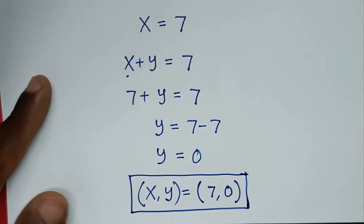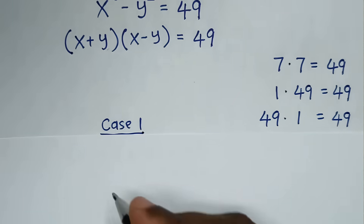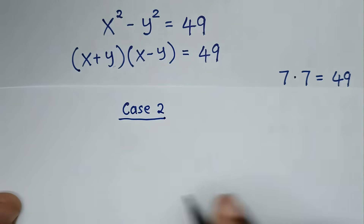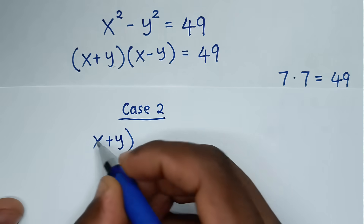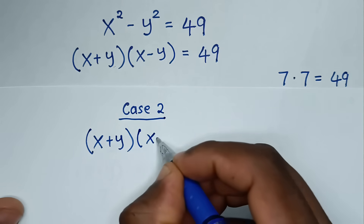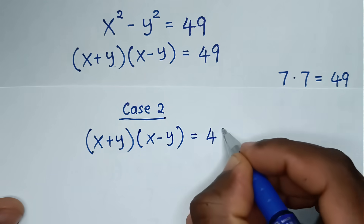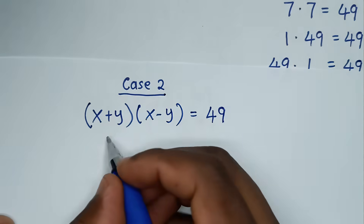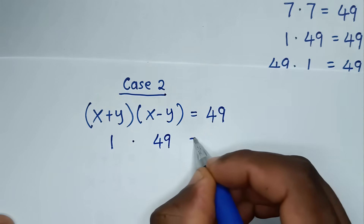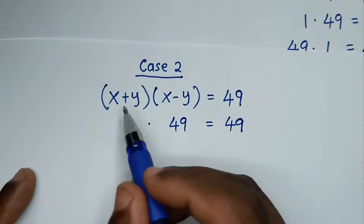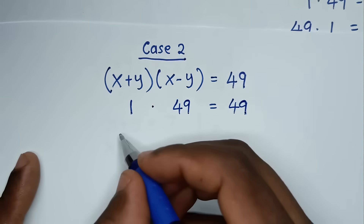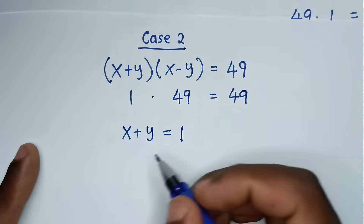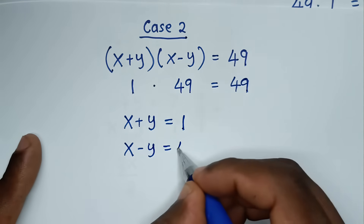Now let's solve the second case. From the equation (x + y)(x - y) = 49, in case 2 we have 1 times 49. So comparing, we get x + y = 1 and x - y = 49.